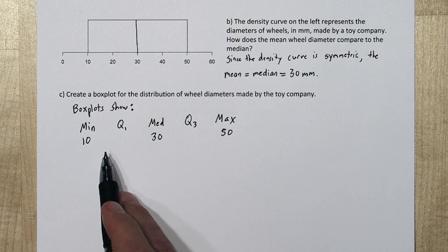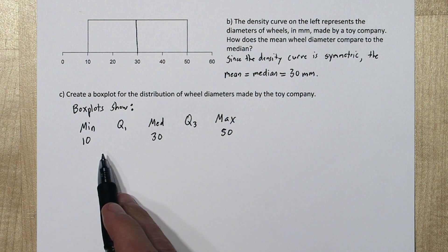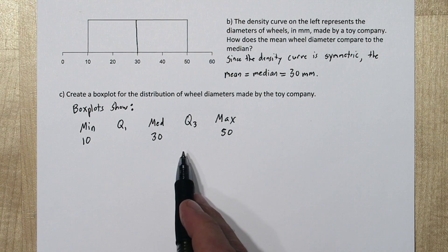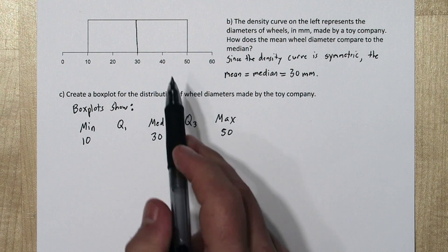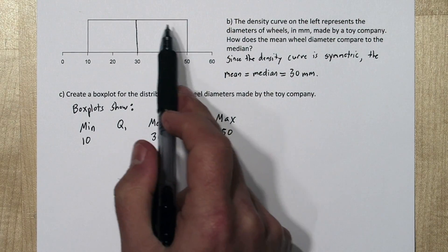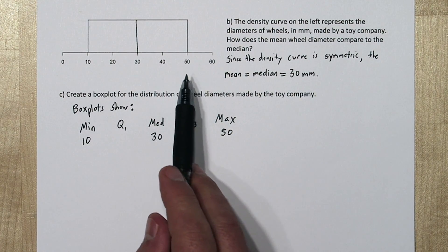Now quartile 1 is the value that cuts off the lower 25% of wheel diameters. And quartile 3 is what cuts off the upper 25% of wheel diameters. So if we look at this entire density curve, we can see the range is 40.